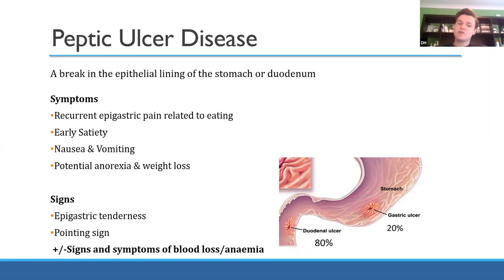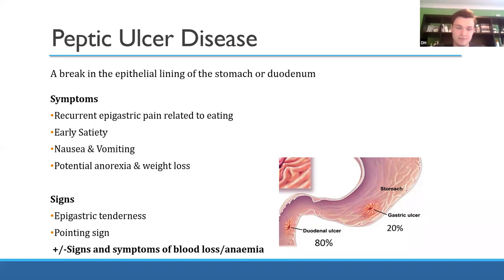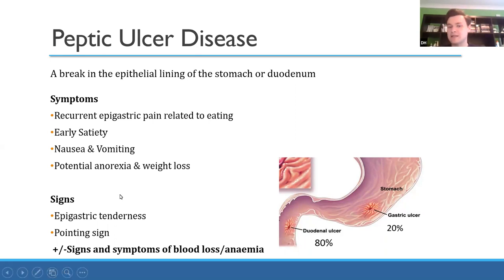In terms of signs, there's not too much. Epigastric tenderness makes sense. The pointing sign means if you ask the patient where the pain is, they can point exactly to it — classically associated with peptic ulcers. Ulcers can also bleed, so patients may develop signs of anaemia: fatigue, koilonychia — spoon-shaped nails — a flow murmur, or if there's blood loss, melaena and an upper GI bleed.